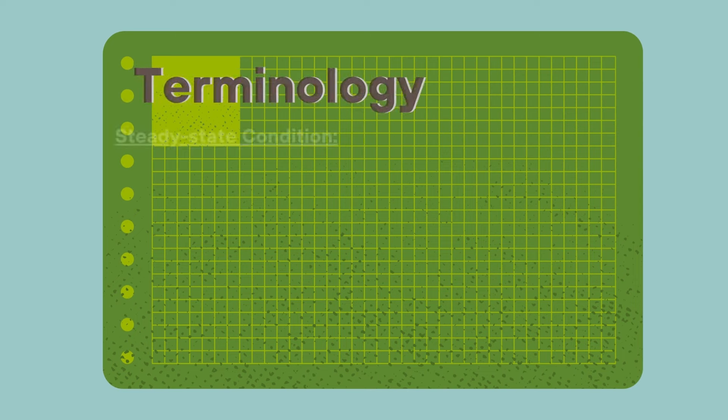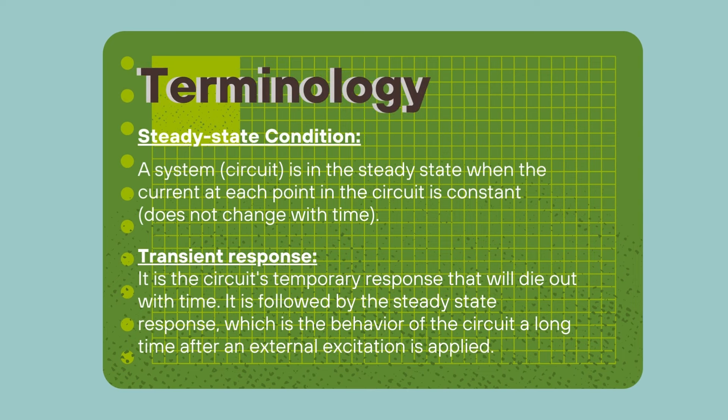Before we get on with the video, let's remember some terms first. What is steady state condition? A system, or in our case a circuit, is in the steady state condition when the current at each point of the circuit is constant, meaning that it does not change with time.